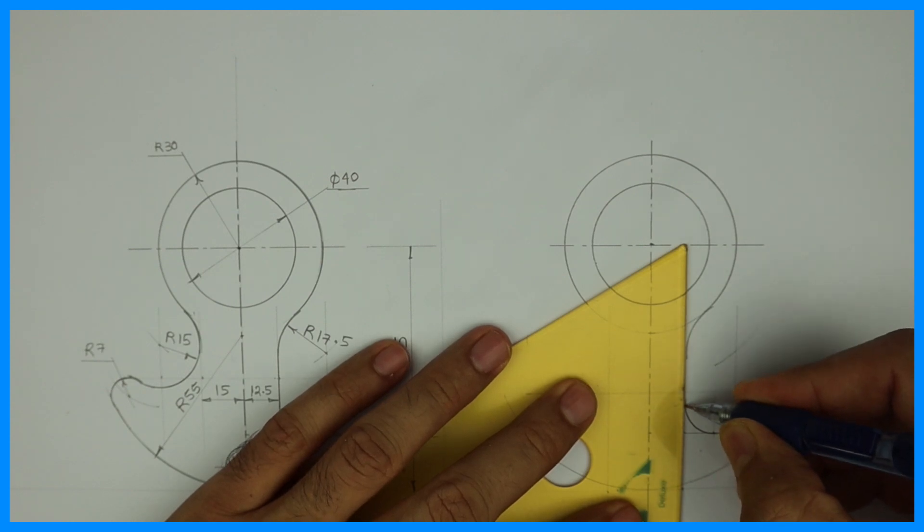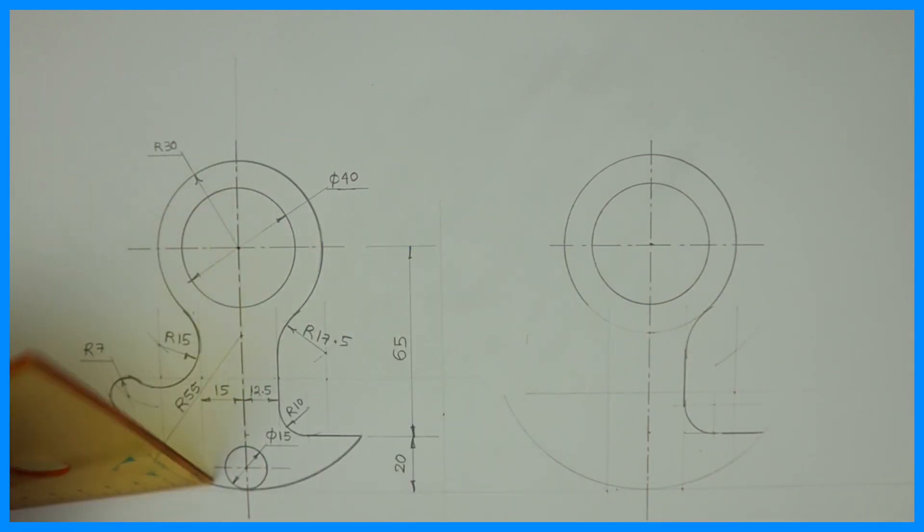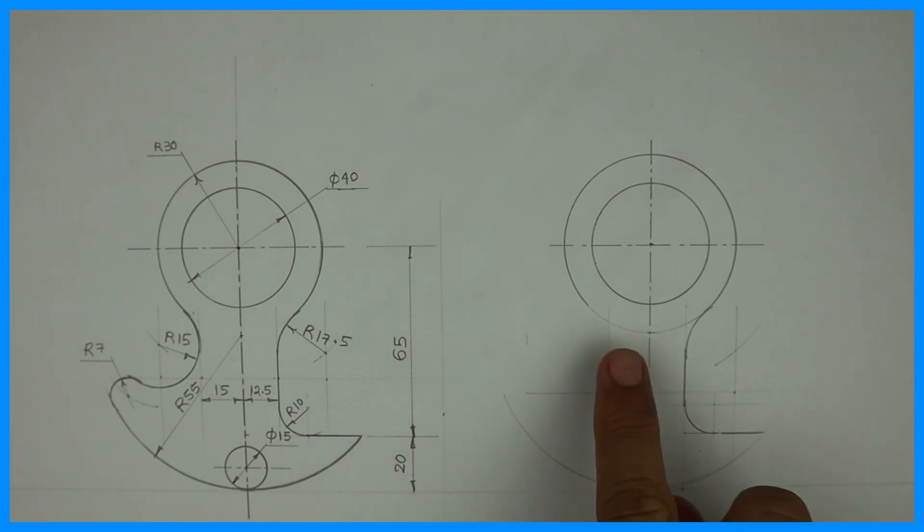See this. So we took parallel line and circle plus addition, like 30 plus 17.5.